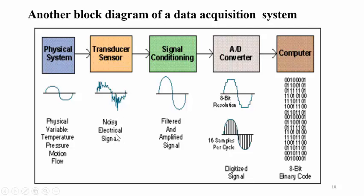The transducer is responsible to produce or to sense these particular parameters. From this transducer we are getting the noisy electrical signal, and this noisy or weak signal is then passed to the signal conditioning block or signal conditioning circuitry. This signal conditioning circuitry is responsible to filter the distorted signals, and from it we get a filtered, cleared analog signal or amplified, boosted electrical signal.